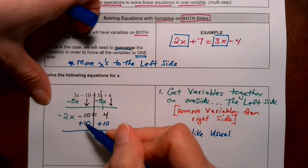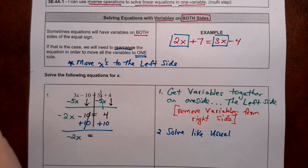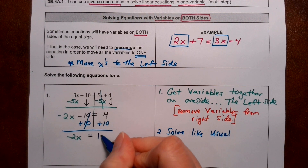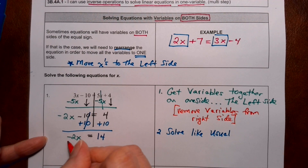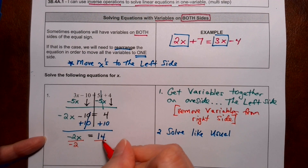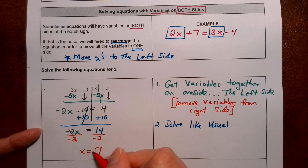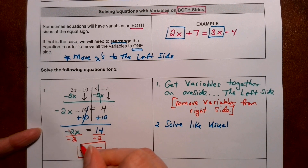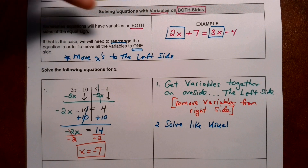That's the new step today. When x is being multiplied by a number, we divide, which is the inverse. And x is equal to negative 7. The new step today is to get all your variables on one side so it turns into a multi-step equation like in the past. Let's do another one.